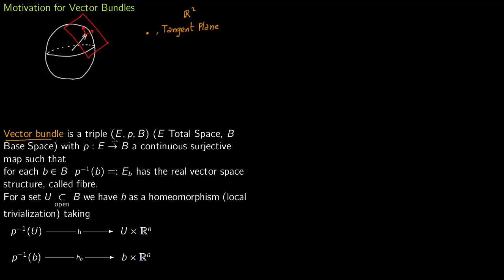So vector bundle is a triple. It contains three things: E, P, and B. E is called the total space, B is called the base space, and then P is a projection map from E to B. So this is a continuous surjective map.